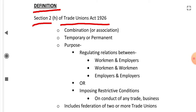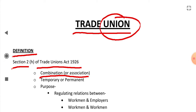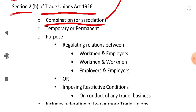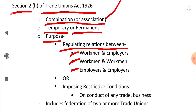According to Section 2h of the Trade Unions Act 1926, a trade union is a combination or association — from the word 'union' itself you get the meaning: combination or association. It can be temporary for some time or it can be permanent. The purpose of trade union is to regulate relations between workmen and employers.